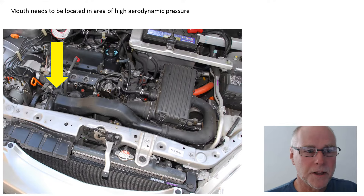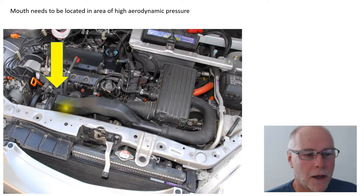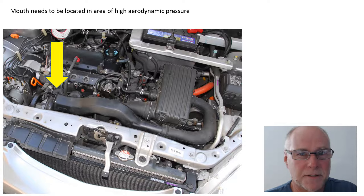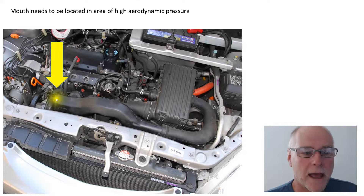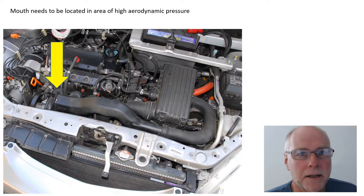The mouth needs to be located in an area of high aerodynamic pressure. Here's a photo of an engine bay from an older car — look where the mouth of the intake system is. It's actually inside the engine bay, which is not an area of high aerodynamic pressure. In fact, typically we want the engine bay to be at atmospheric or even below atmospheric pressure in order to force air through the radiator. Having the entrance duct located in the engine bay is not how you want to do it.